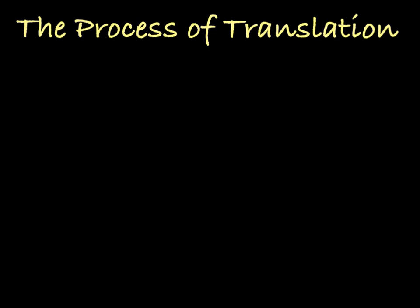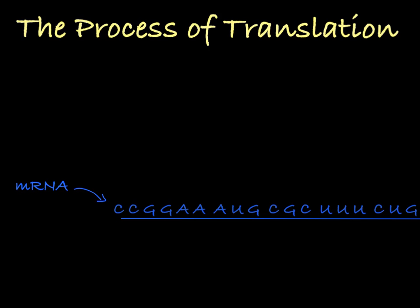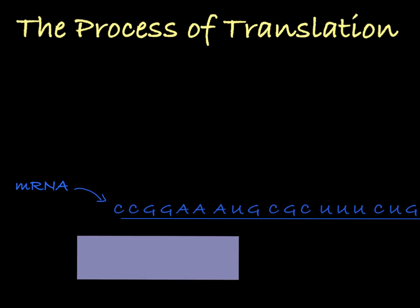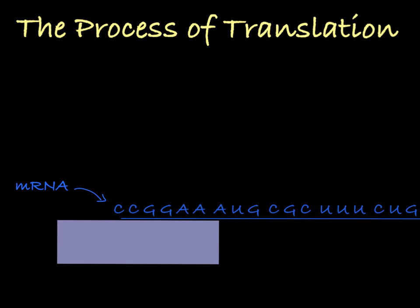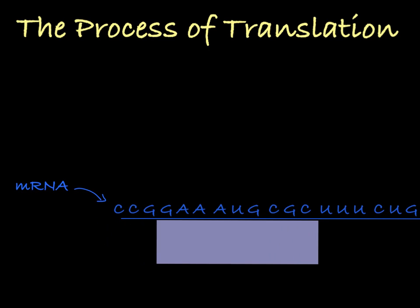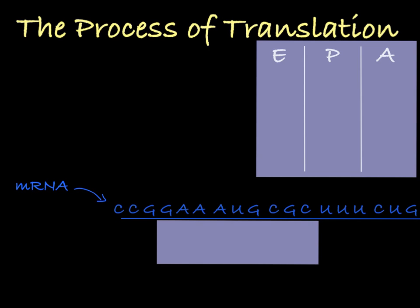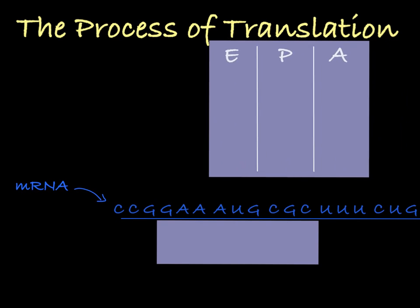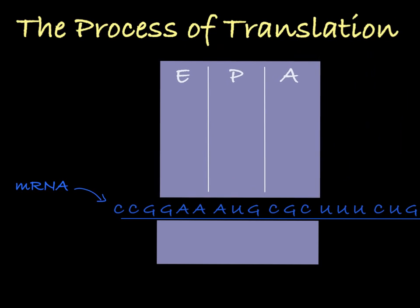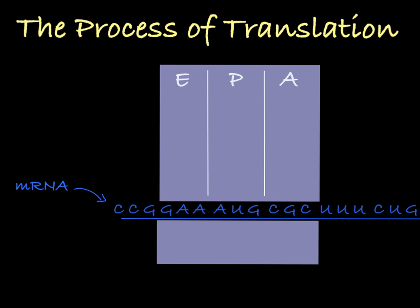So let's break down the process of translation. After an mRNA molecule has been created and has entered the cytoplasm of the cell, the small subunit of a ribosome will then bind to it and scan along the molecule until it finds the start codon, AUG. After it finds this start codon, the large subunit of the ribosome will attach to the complex, aligning the AUG codon in its P site location.